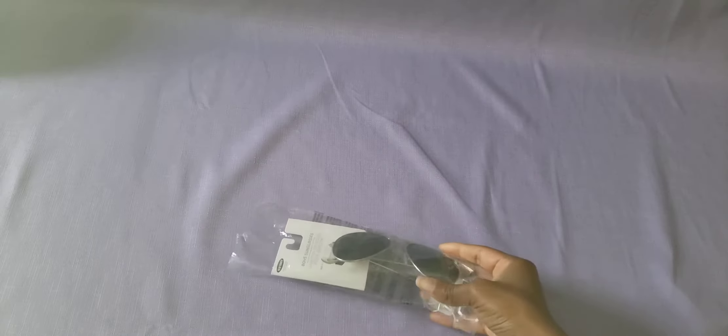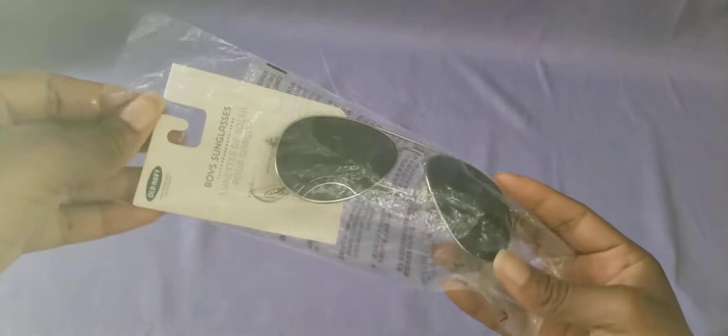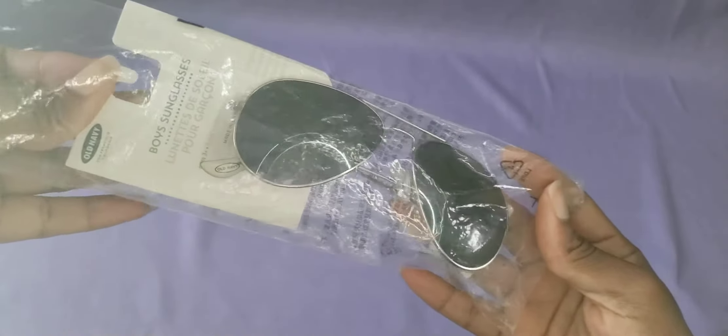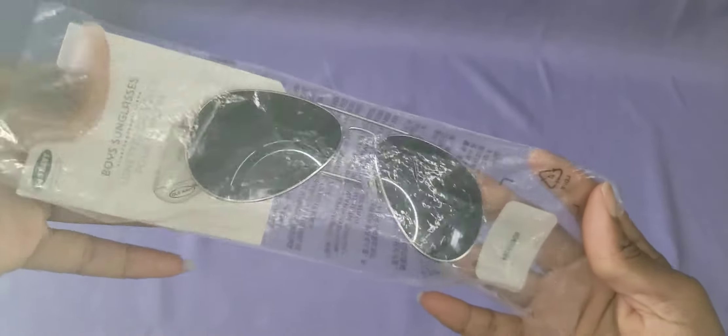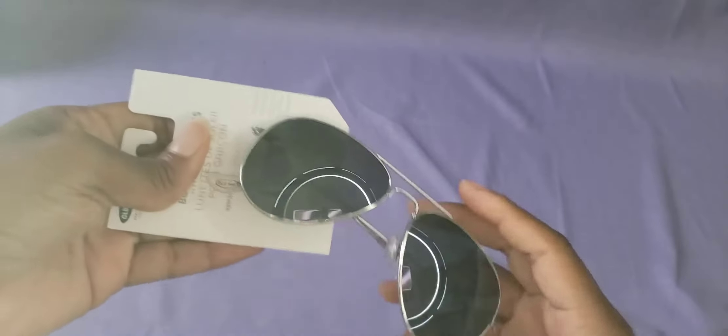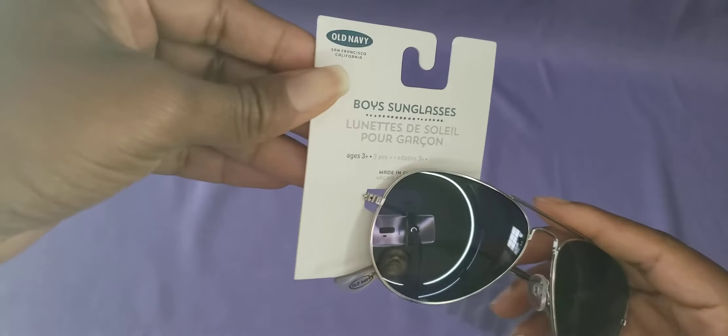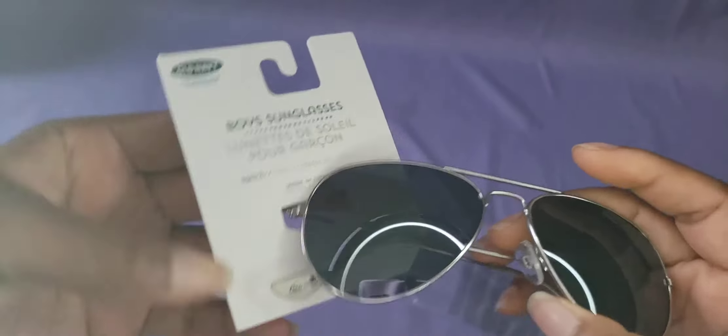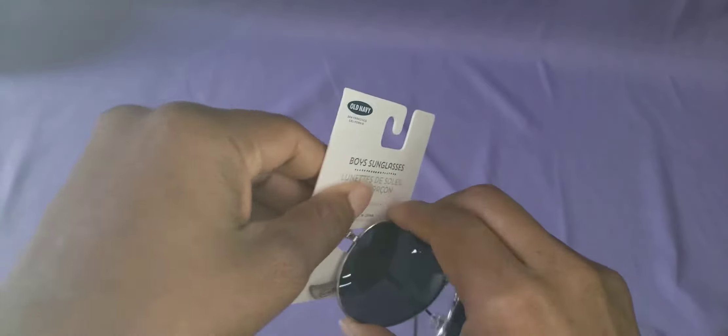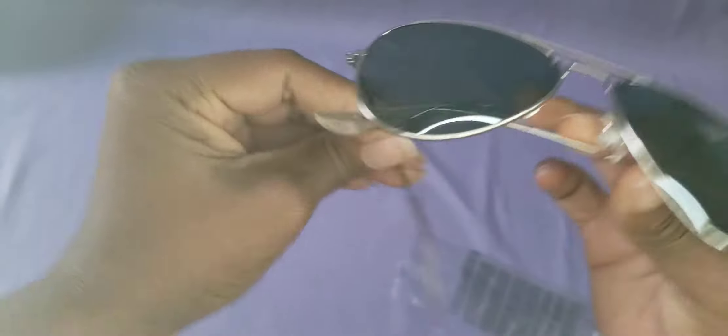All right, so these sunglasses are from Old Navy. They are boys toddler, still in the plastic, still has the tag. It is recommended for ages 3 and up. Let's take it out of the tag and open it up for you.